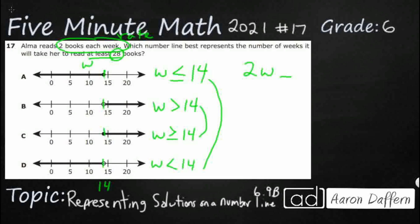She wants to read at least 28 books, so the question is: would we want her to read 29 or 27? 'At least 28' means you need to hit your number and you can go more. So 28, 29, 30 are all fine — it's going to be greater than or equal to. What you don't want is less than 28 books.